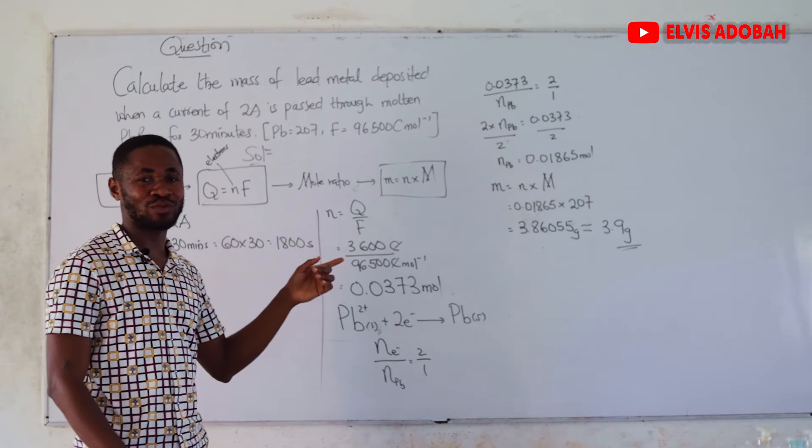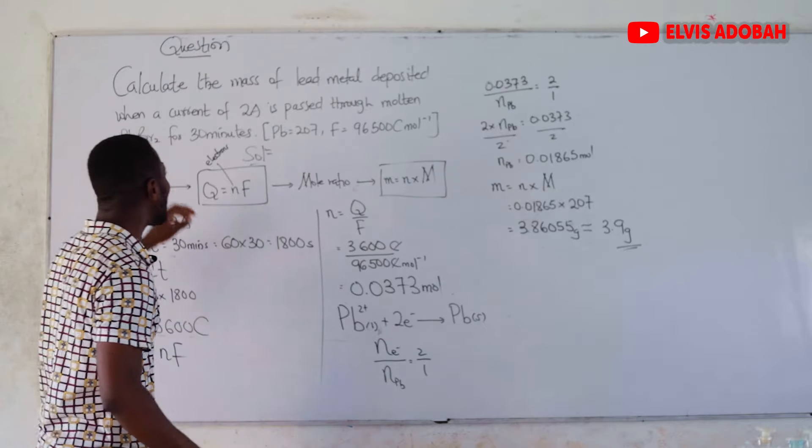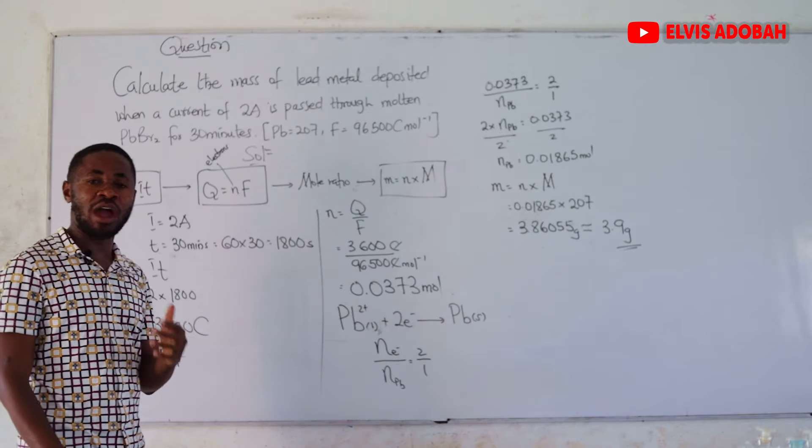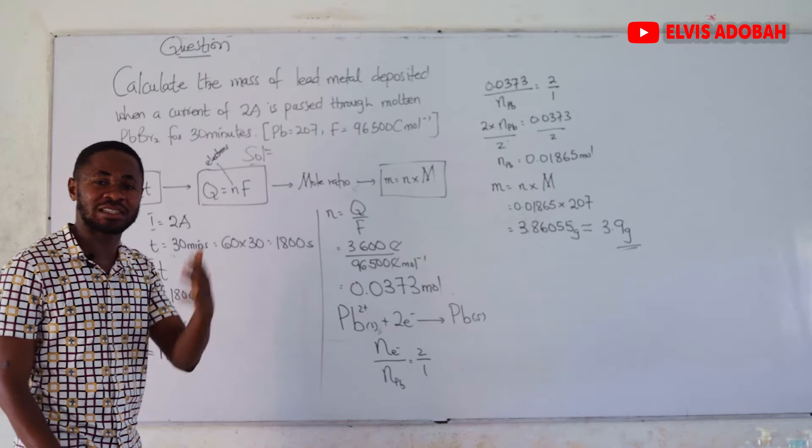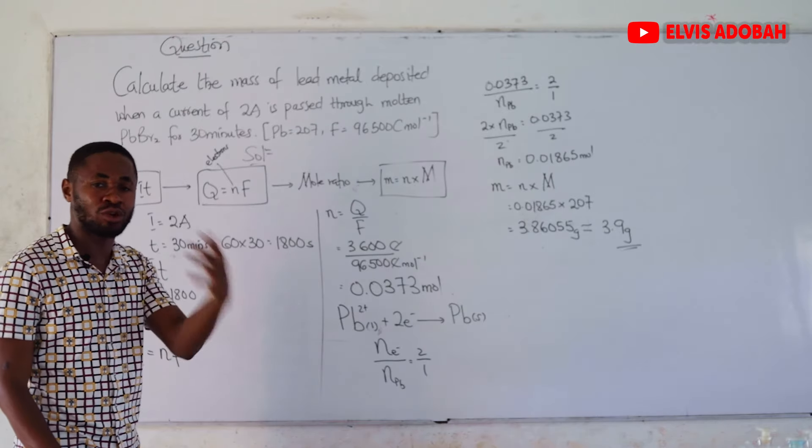Approximately, 3.9 grams mass. That will be the mass of lead deposited at the cathode.